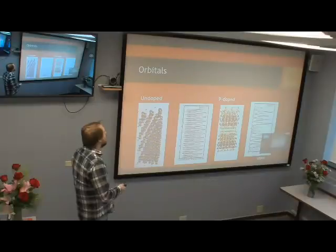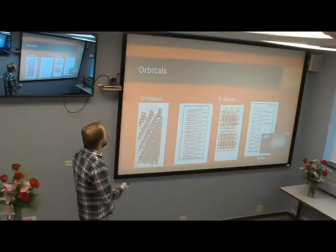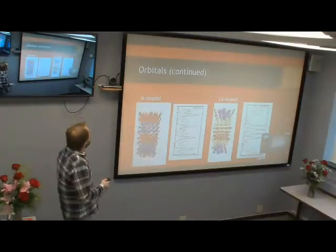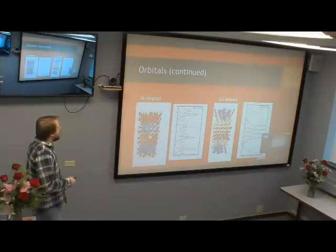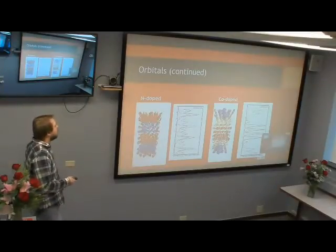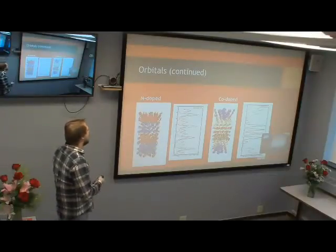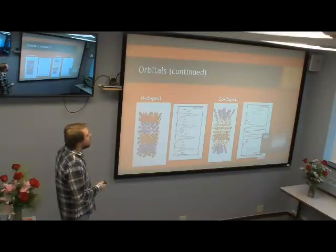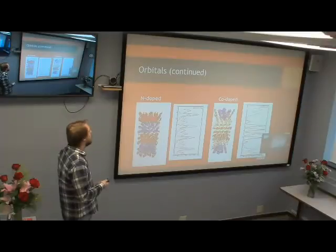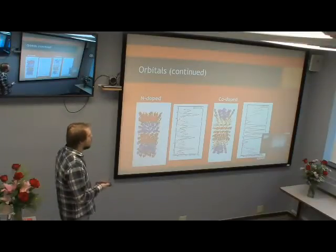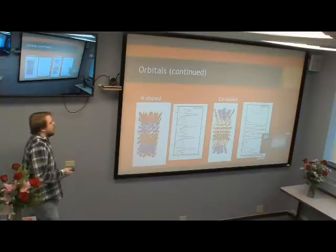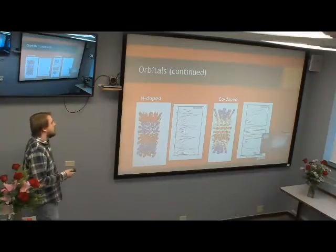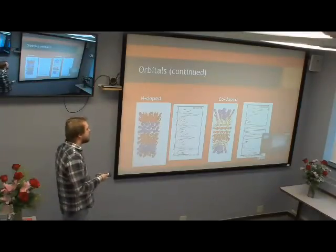In the undoped model, the orbitals are delocalized — spread out throughout the entire structure. A similar thing is seen with the P-doped model; it's not quite as smooth but doesn't localize around any particular dopant. With the N-doped model, you do see a little bit of localization, probably due to occupied states in the conduction band. With the co-doped model, you can clearly see that the HOMO is localized around the aluminum atoms (the P-dopants) and the LUMO is localized around the N-dopants, indicating that charge transfer could take place from the P side to the N side of the junction.